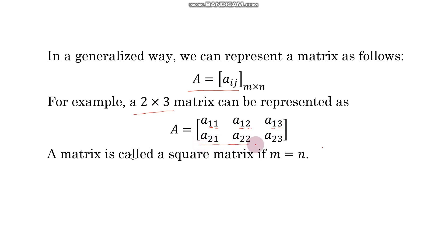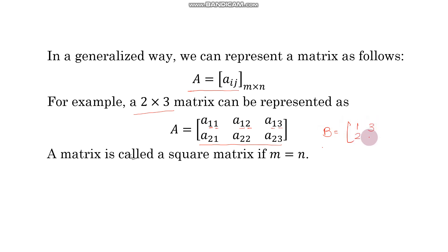The matrix is called a square matrix if m equals n. For example, B = [[1, 2], [3, 4]] is a square matrix. So instead of saying the order of matrix B is 2 by 2, you can simply say the order of the matrix is 2.